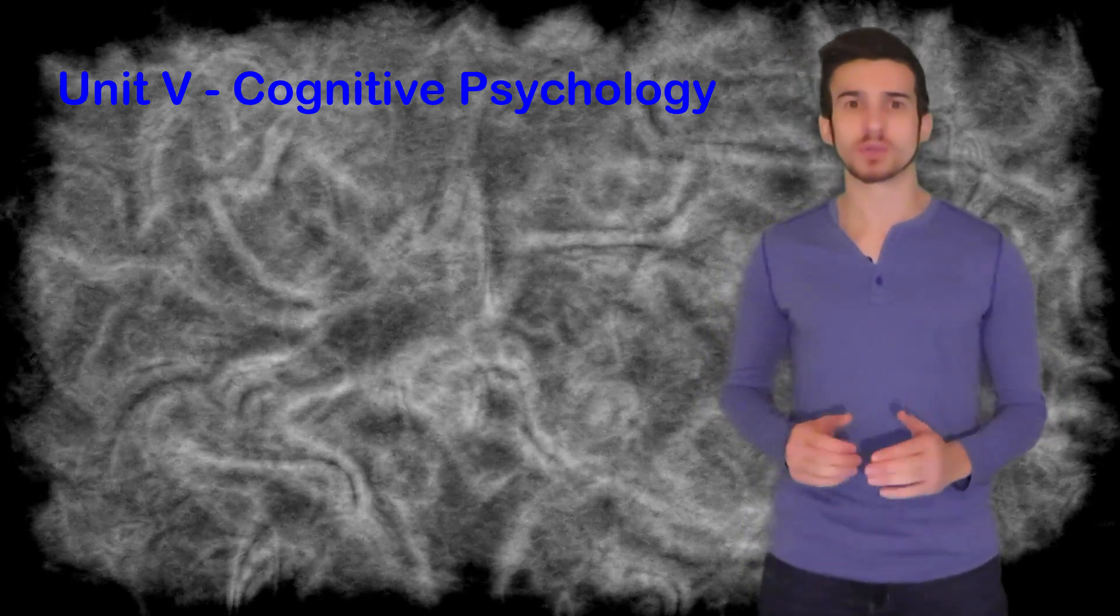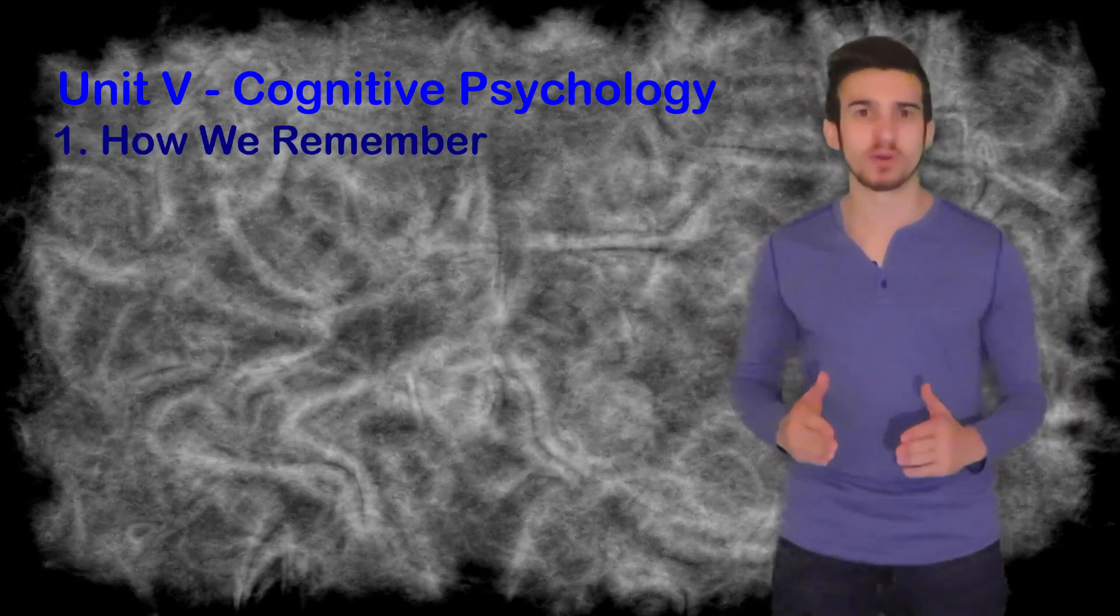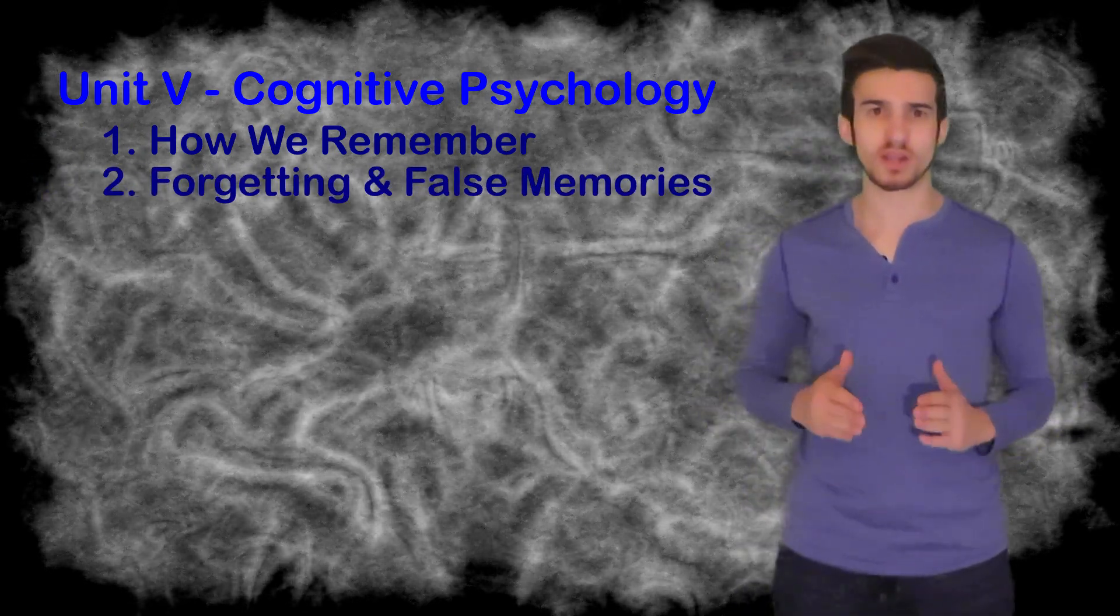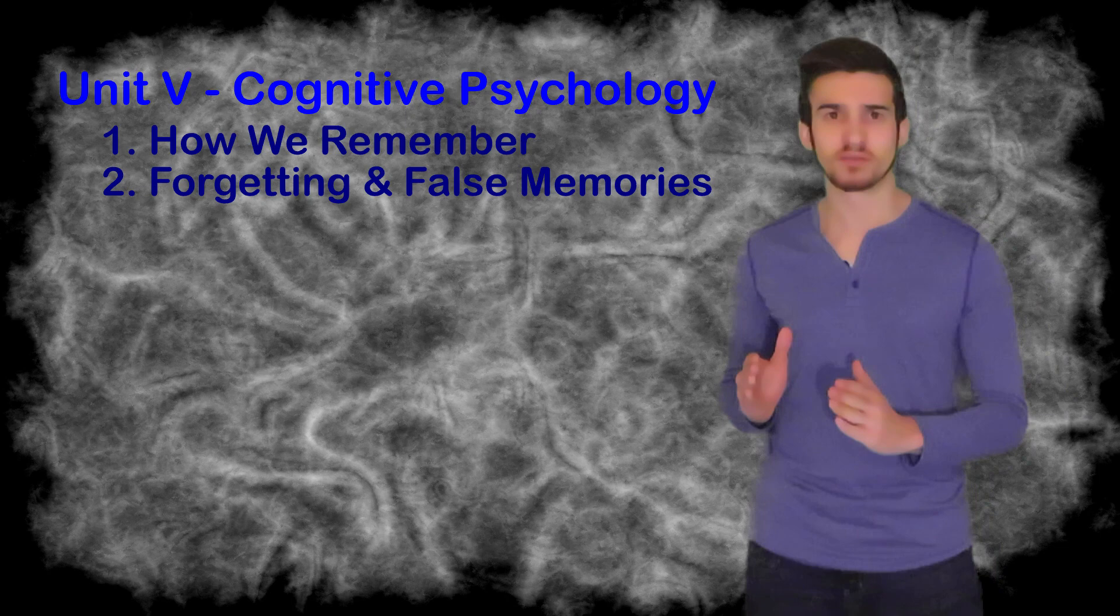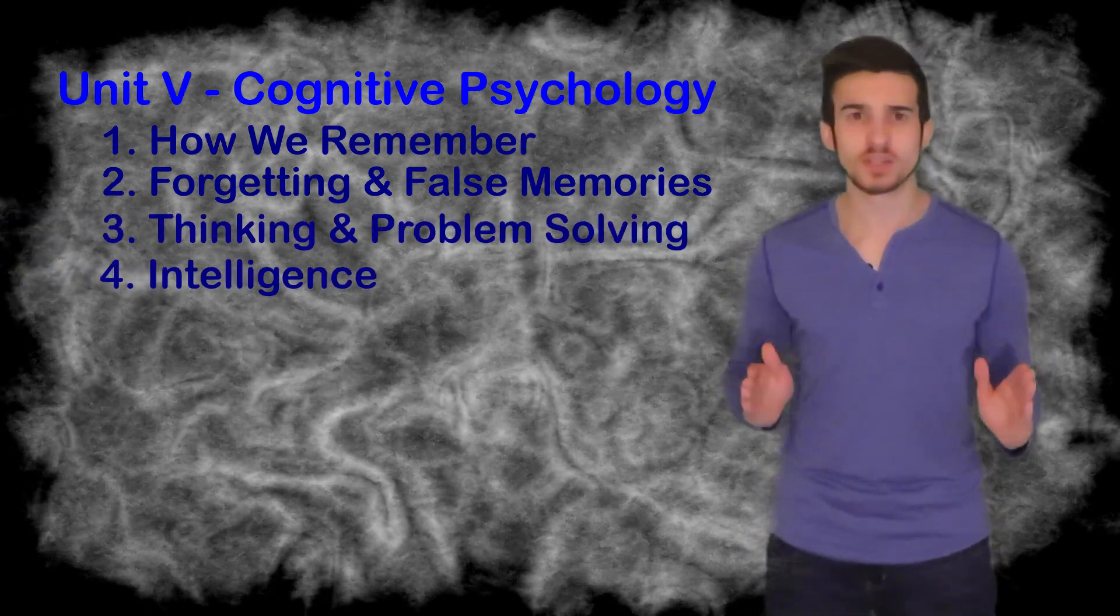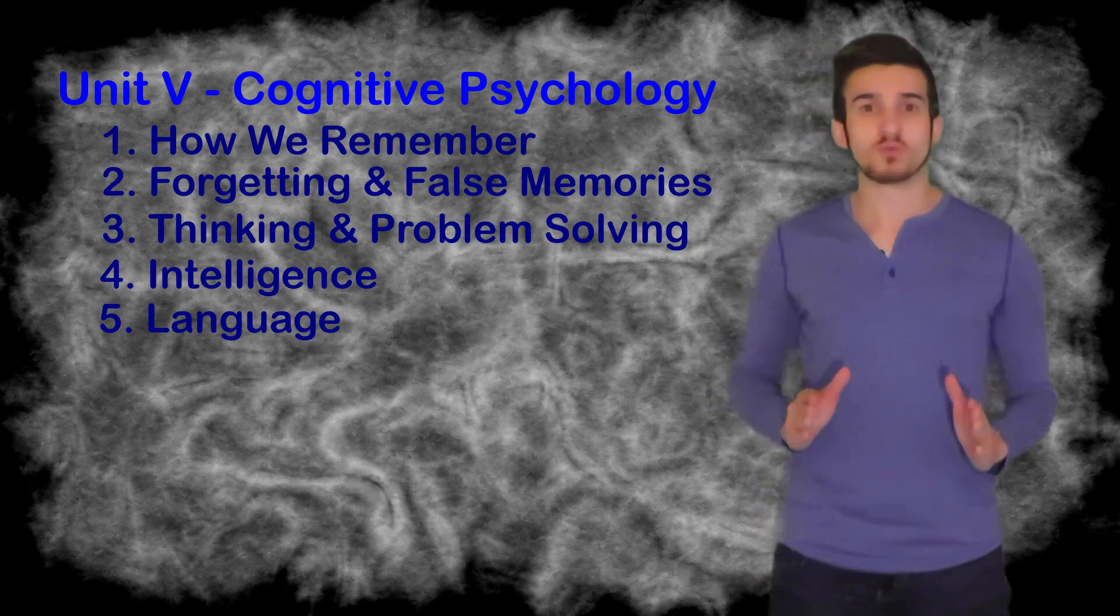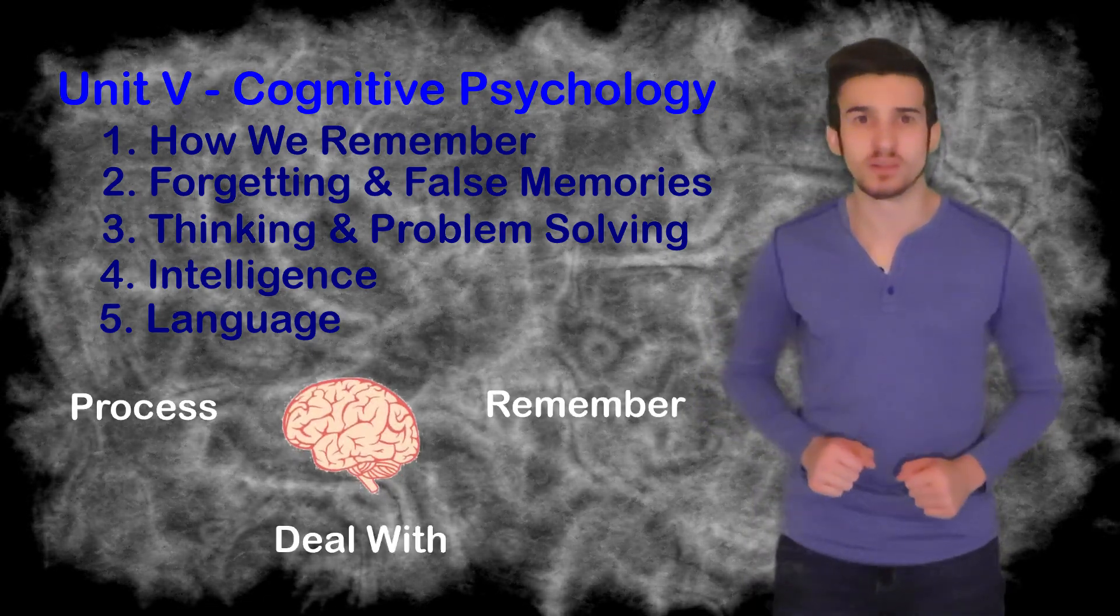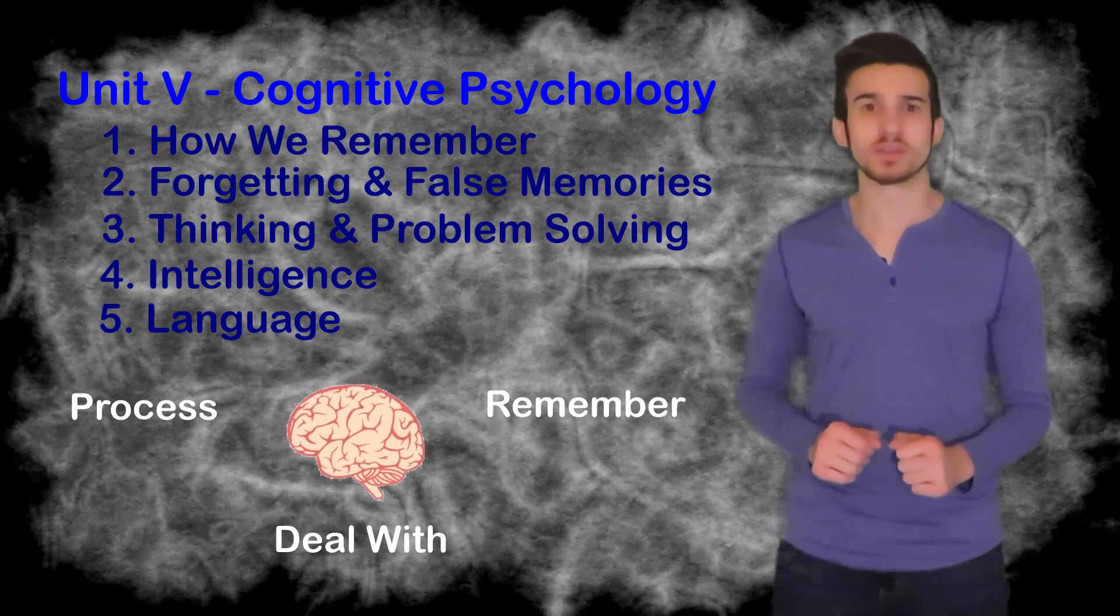In this video review, we will start off by talking about memory and remembering, and we'll move on to forgetting and false memories. From there, we'll step away from memory and look at other cognitive processes, such as thinking and problem solving. We'll then move on to intelligence and finish off with language. Each one of these cognitive processes allow us to process, remember, and deal with all the information the brain receives.